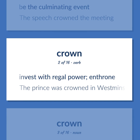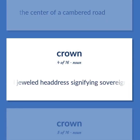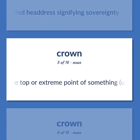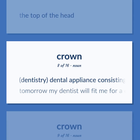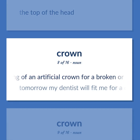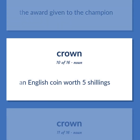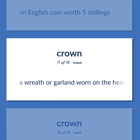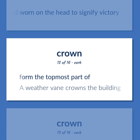Crown: Invest with regal power; enthrone — the prince was crowned in Westminster Abbey. The center of a cambered road. An ornamental jeweled headdress signifying sovereignty. The upper branches and leaves of a tree or other plant. The top of the head. Dentistry — a dental appliance consisting of an artificial crown for a broken or decayed tooth — tomorrow my dentist will fit me for a crown. The award given to the champion. An English coin worth five shillings. A wreath or garland worn on the head to signify victory. Form the topmost part of — a weathervane crowns the building.